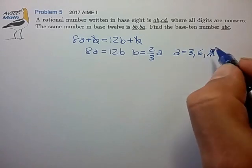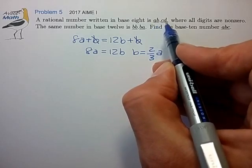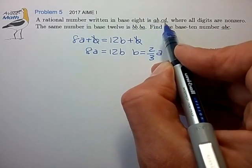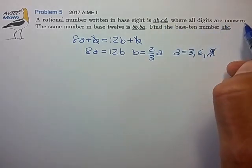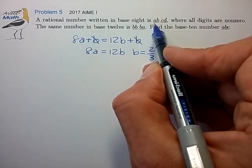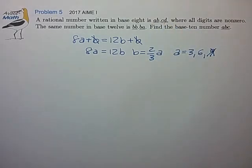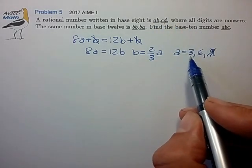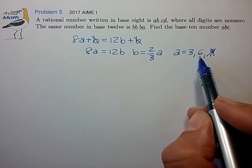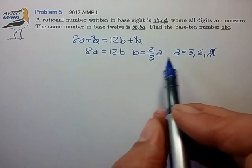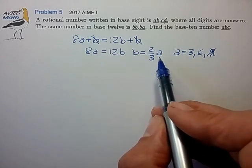So we find out that A has to be possibly 3 or 6 or 9. Actually, 9 doesn't work because these are all digits written in a base 8 number. So these digits all have to be less than 8, and they're nonzero. So these digits all have to be somewhere in the range of 1 through 7. So that's an important constraint. So right off the bat, we know that A has to be either the digits 3 or 6, from which we can then calculate the digit B as two-thirds of A. So B has to be either 2 or 4.